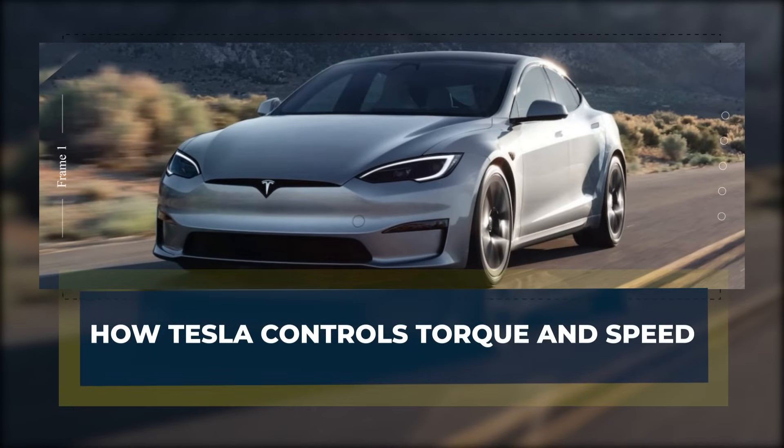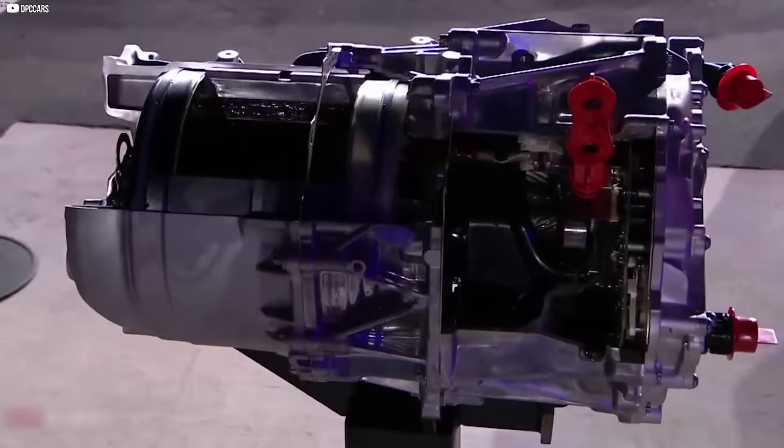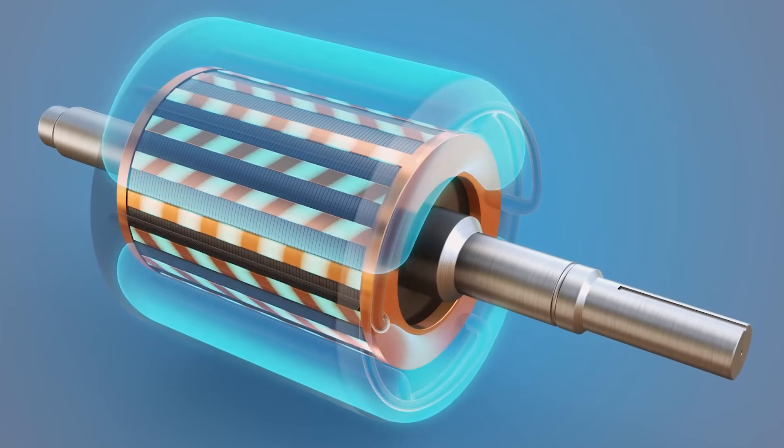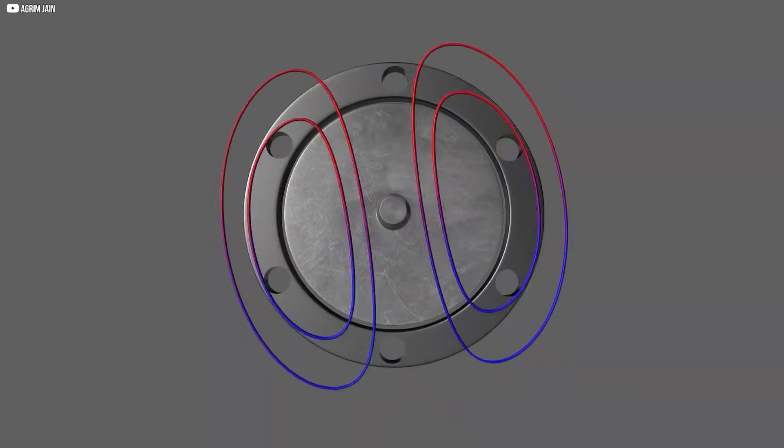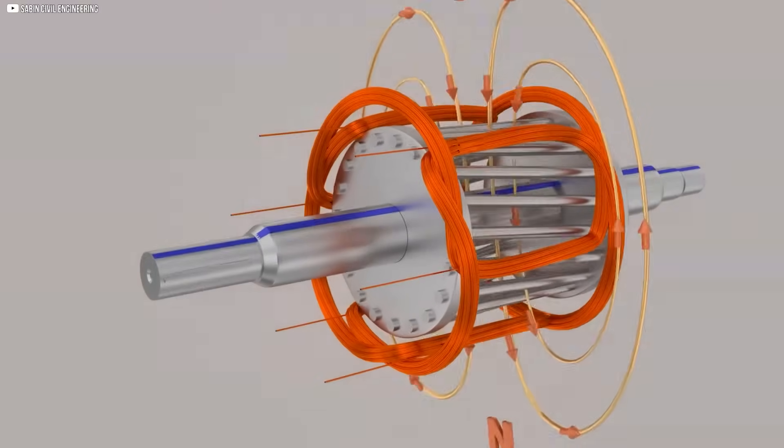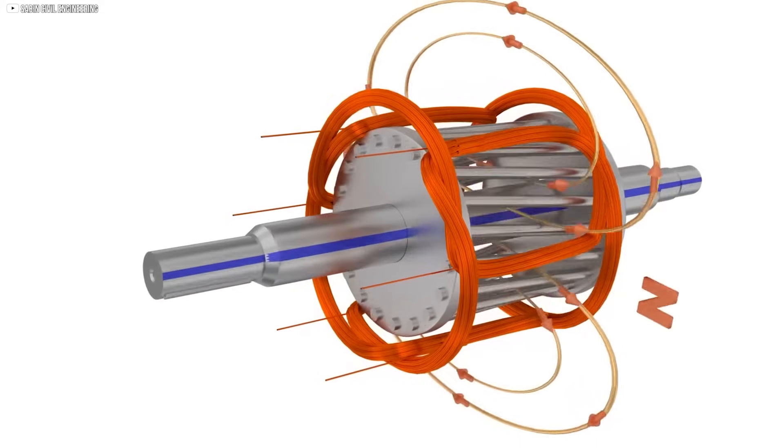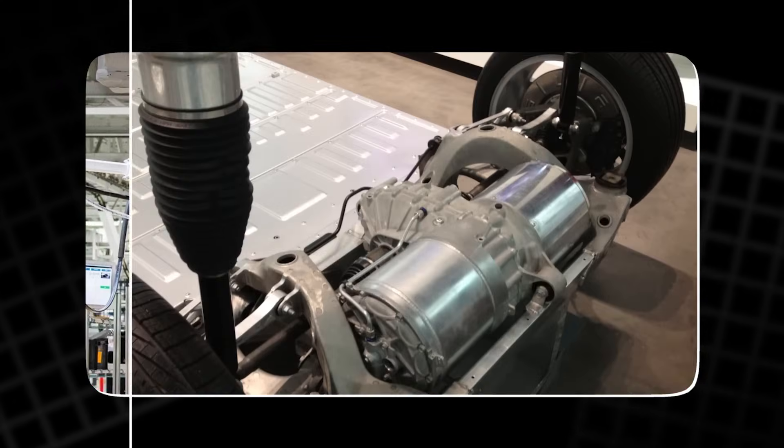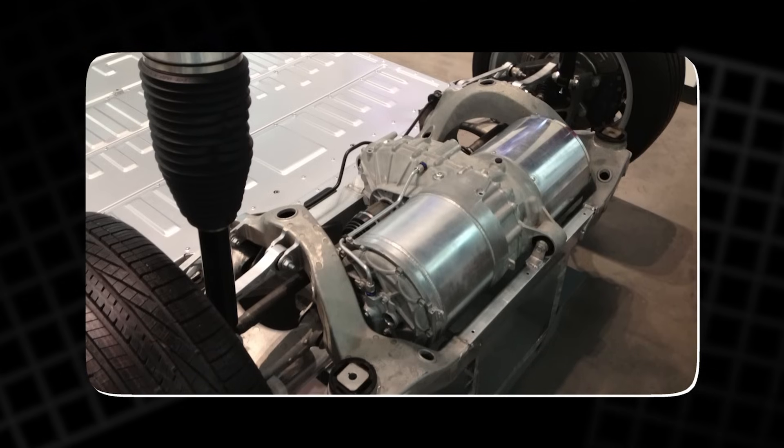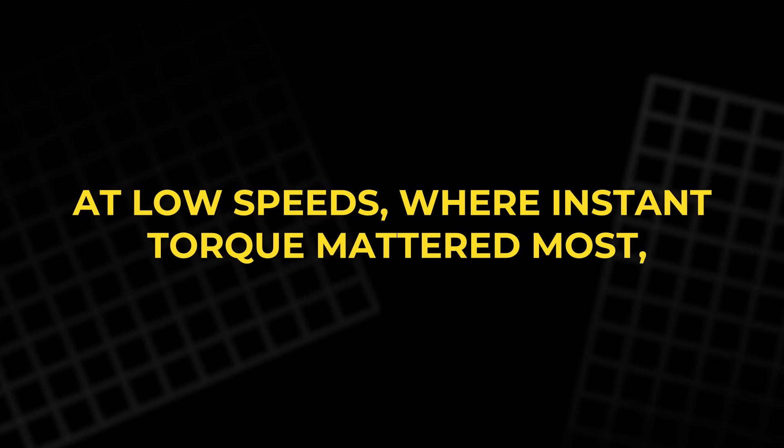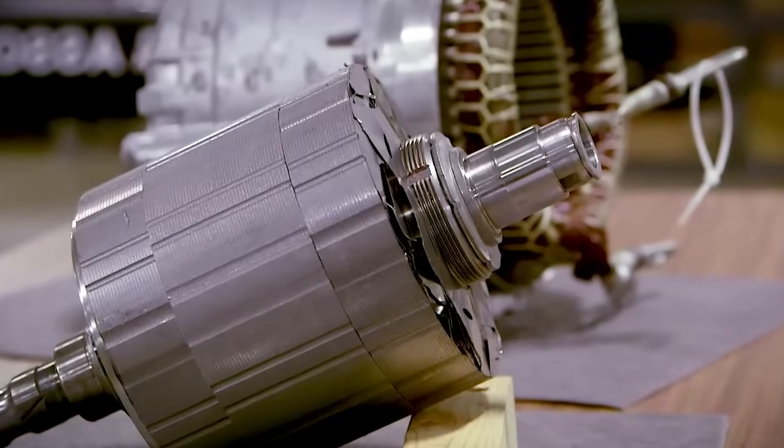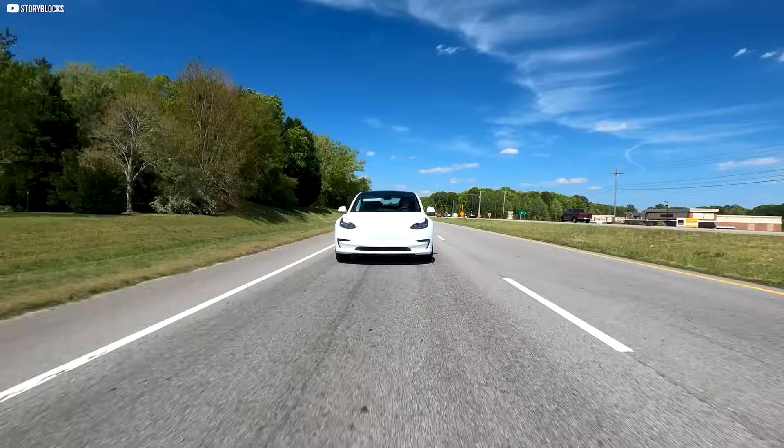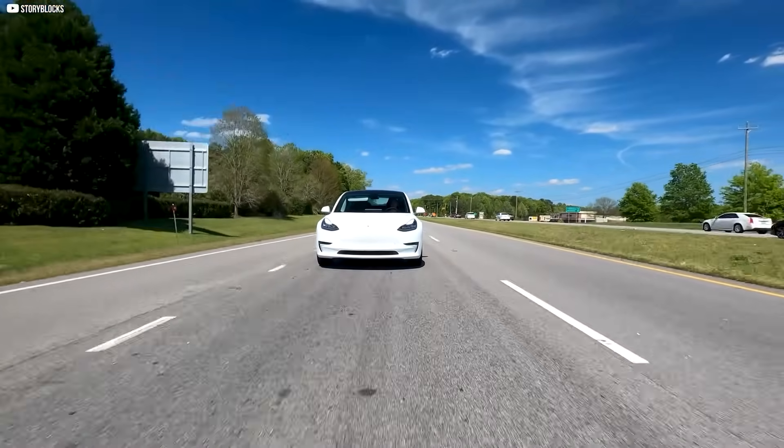Building a hybrid motor was only part of the challenge. The real magic came in how Tesla controlled it. At the center of this control system was something called the Rotating Magnetic Field Angle, or RMF angle for short. This is the angle between the magnetic field generated by the stator and the rotor's magnetic field. Adjusting this angle allowed Tesla engineers to control how much torque the motor produced at any given moment. At low speeds, where instant torque mattered most, Tesla kept the RMF angle near the sweet spot where both permanent magnet torque and reluctance torque peaked together. This made launches from a standstill feel aggressive and effortless.